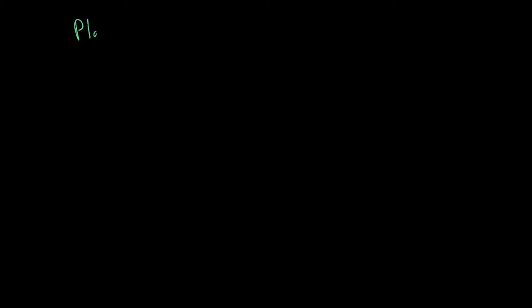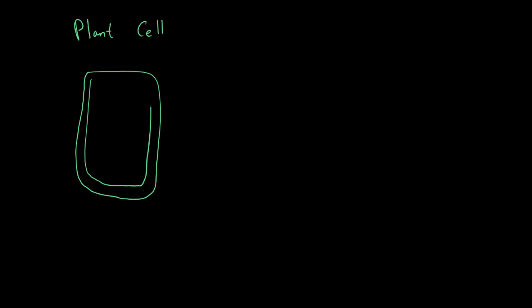Now let's draw a plant cell. The plant cell is the most complicated of the four because it has everything an animal cell has and more. I've drawn it in green to show it's a plant - the color doesn't matter in reality, as you can only see cells under a microscope when you stain them.